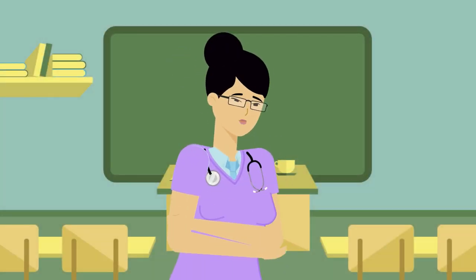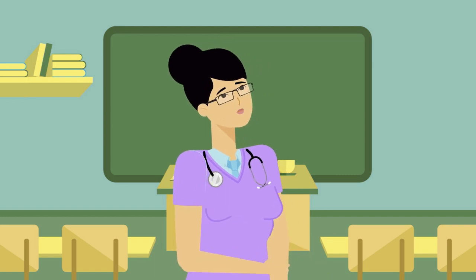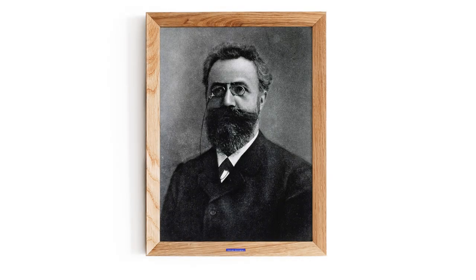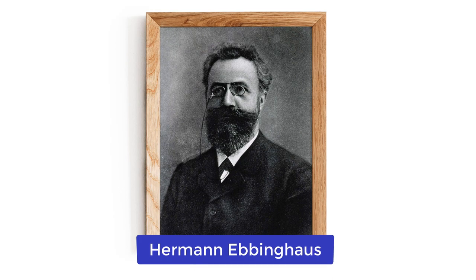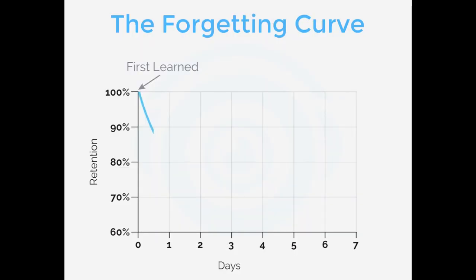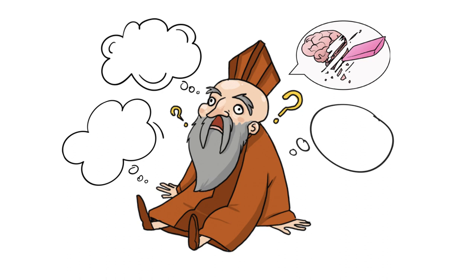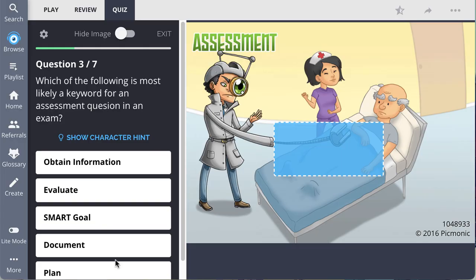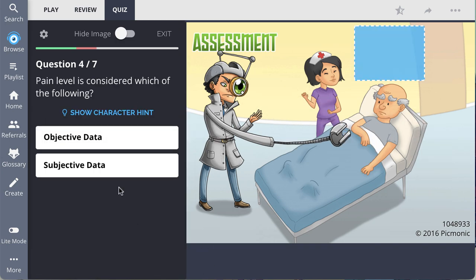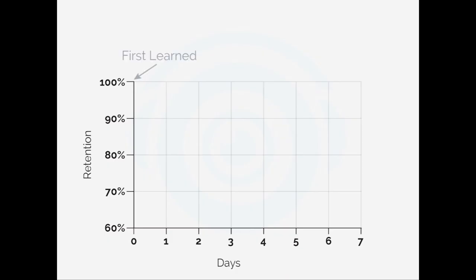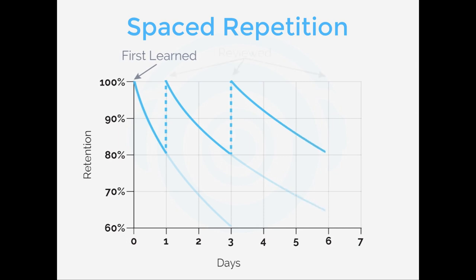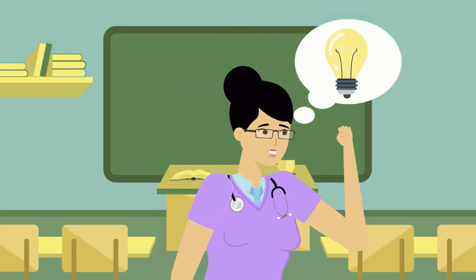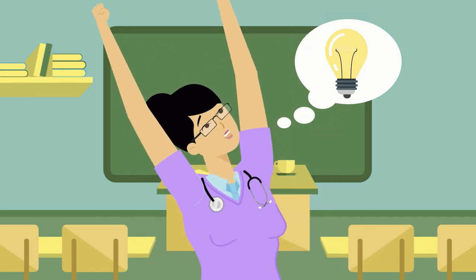But why do we need to talk about spaced repetition? Well, for starters, this guy, who in 1885 coined the term the forgetting curve and showed people for the first time that we forget at an exponential rate. But by reviewing previously learned information over increasing intervals of time, also known as spaced repetition or the spacing effect, you can more effectively turn what you need to remember into long-term memories.